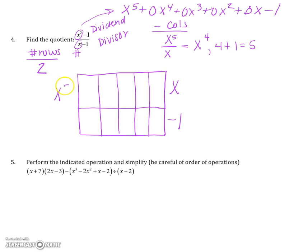So I have x to the 5th and 0x to the 4th, 0x to the 3rd, 0x squared, 0x, and lastly minus 1.